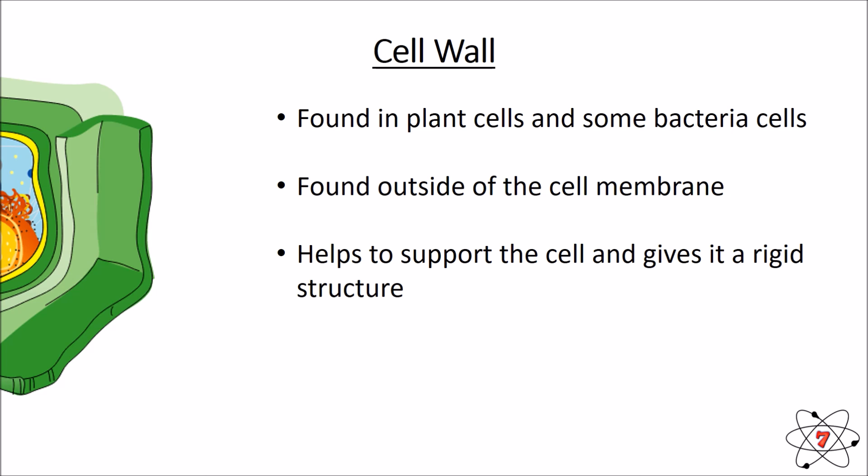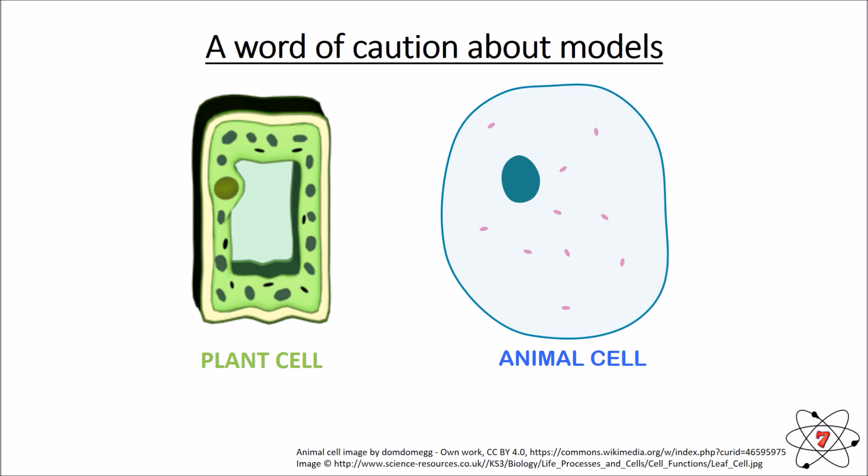We've seen our two main cells and we know the basics about them now. A little word of caution: what we've seen today are models. Real cells don't quite look like this — these are overly simplified to make you understand. But make sure you know the parts and make sure you know what they do, and you're on your way to really understanding what's happening in cells.